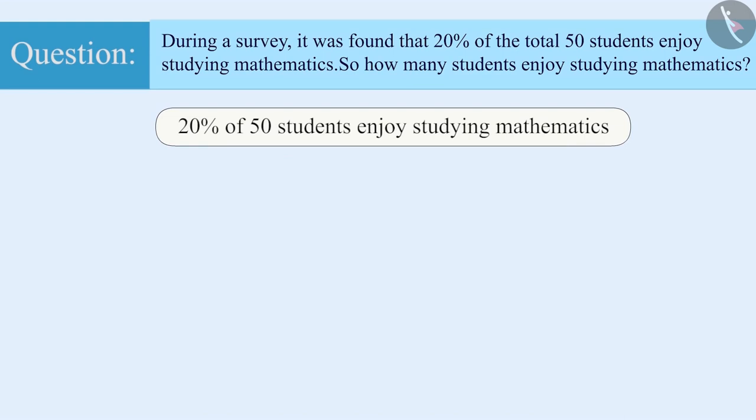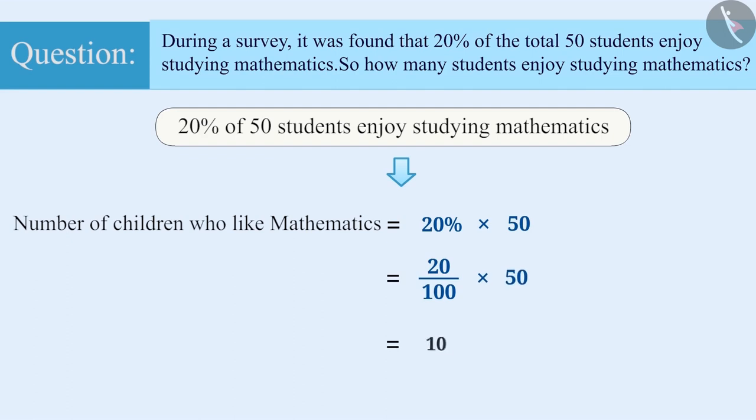Here, 20% of 50 students enjoy studying mathematics. Hence, the number of students who like mathematics will be 20% into 50, which is equal to 20 by 100 into 50, which is equal to 10. So, the correct answer is 10.